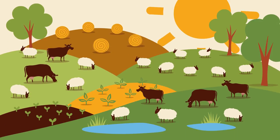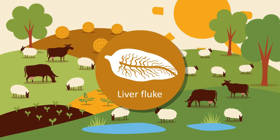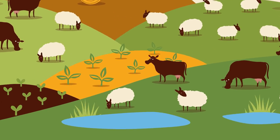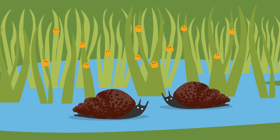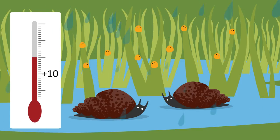Despite this peaceful grazing scene, lurking within these animals and on the ground could be a nasty parasite. The liver fluke is a parasitic flatworm that can cause significant disease and production losses in grazing animals. The fluke has a complicated life cycle involving a tiny mud snail, so fluke is typically found on low-lying, boggy or fluky ground. Fluke also thrive in climatic conditions that suit the snail, so mild winters and warm wet summers.